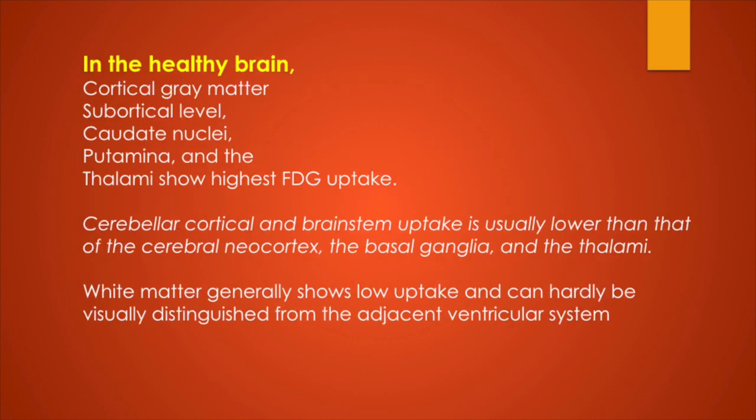In the healthy brain, the subcortical and cortical gray matter — including the caudate nucleus, putamen and thalami — show the highest FDG uptake. Then the cerebellar cortex and brainstem are usually lower in uptake compared to the cerebral parenchyma and basal ganglia and thalami. White matter generally shows low uptake and can hardly be visually distinguished from the adjacent ventricular system.